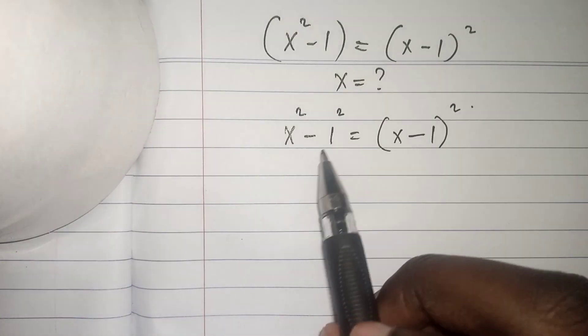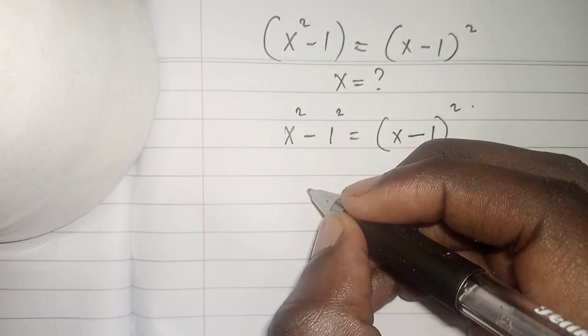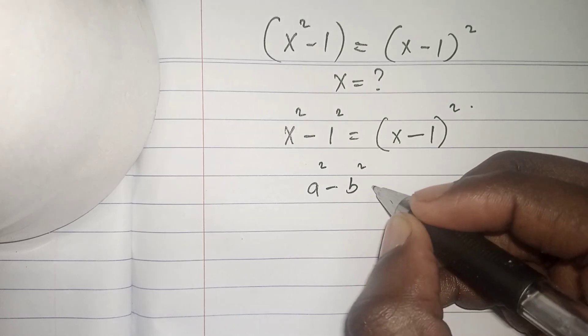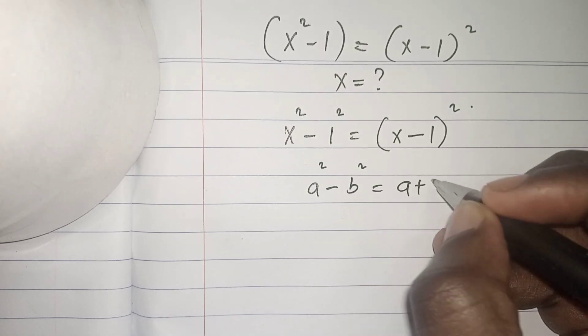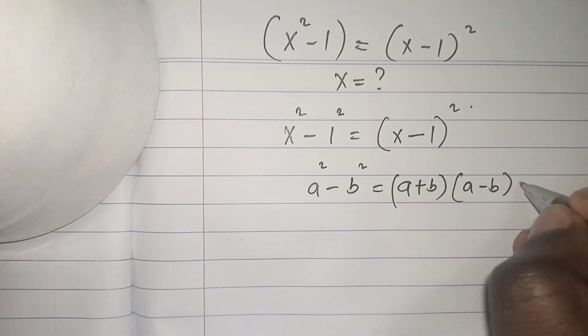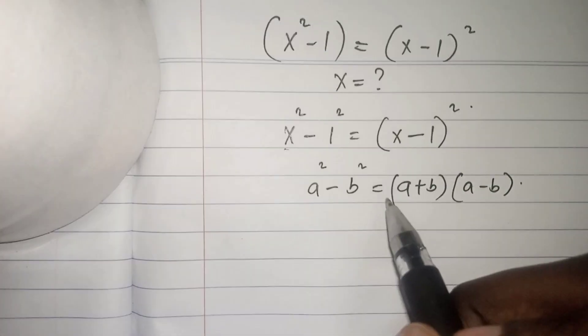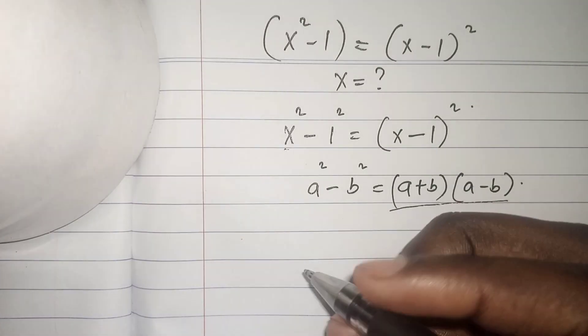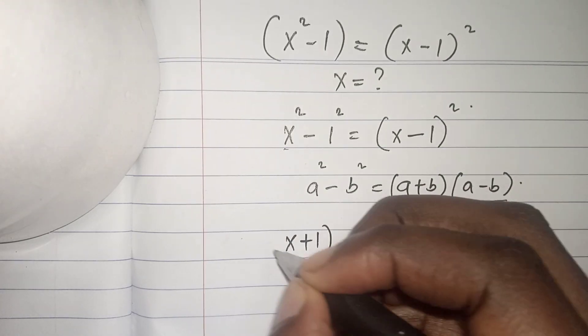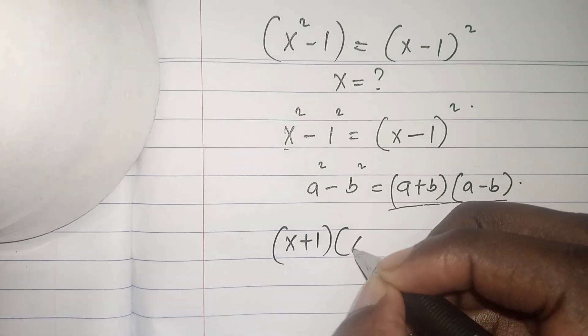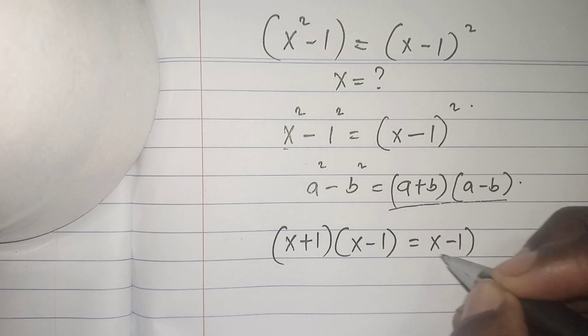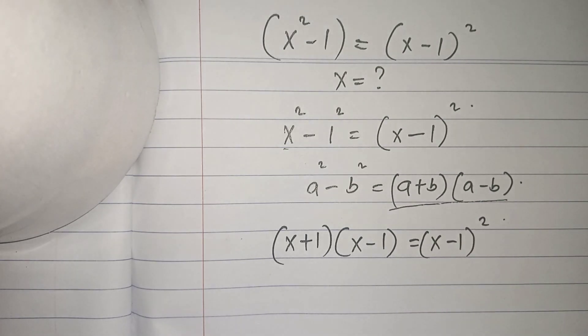This is a difference of two squares. We can use the identity a² - b² = (a + b)(a - b). Expressing this in this form, we get (x + 1)(x - 1) = (x - 1)².